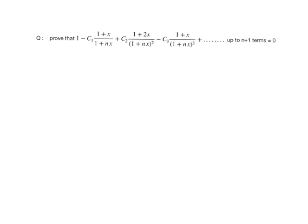The next problem is: prove that 1 minus C1 times (1+x)/(1+nx) plus C2 times (1+2x)/(1+nx)^2 minus C3 times (1+x)/(1+nx)^3 plus dot dot dot up to n+1 terms equals 0. To find the sum, we will write the r-th term.